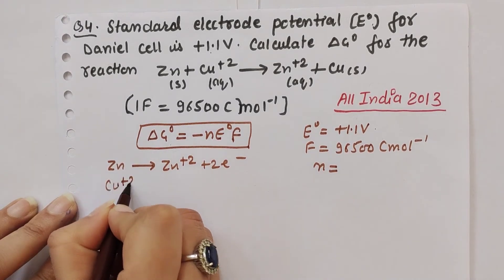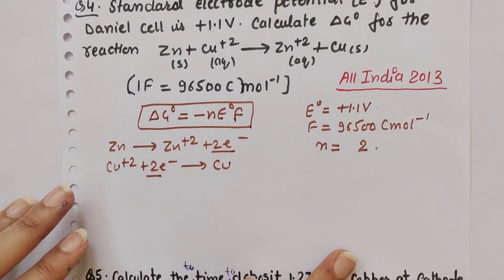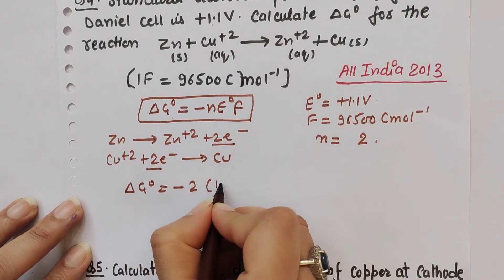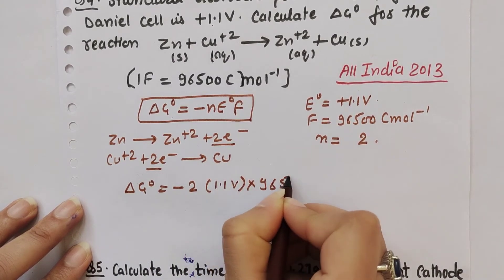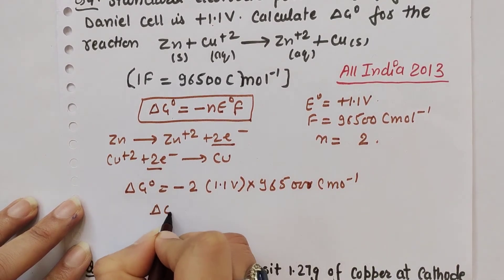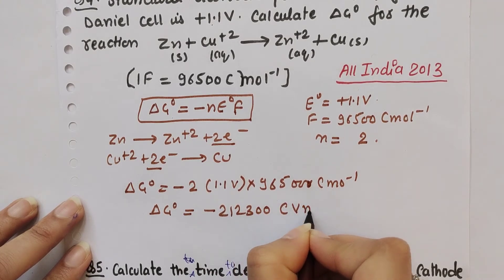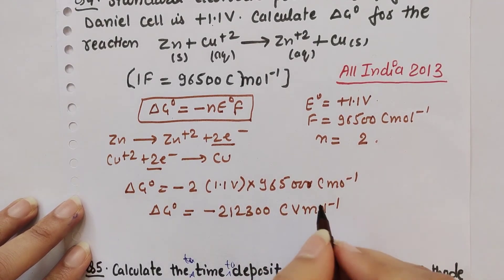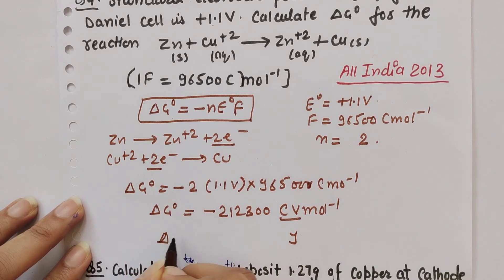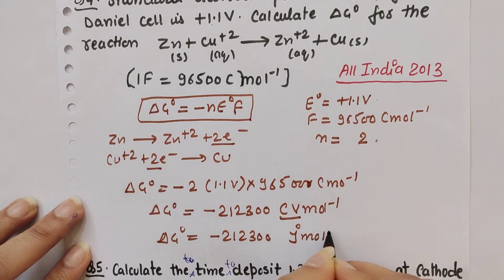Putting the values: ΔG° = -2 × 1.1 volts × 96,500 coulombs per mole = -212,300 coulomb volts per mole. Since coulomb volt equals joules, ΔG° = -212,300 joules per mole.